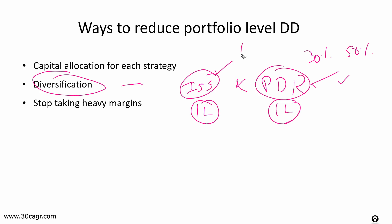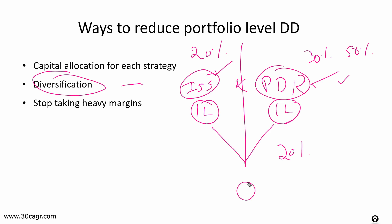The best combination is to diversify into two or more strategies. One advantage is that if you got a 20% loss in ISS strategy in one year, and gained 20% in PDR that same year, the overall drawdown of your portfolio is zero. When one strategy is in loss, the other comes to the rescue and lowers max drawdown. Even in my personal portfolio I divide capital 50% in ISS and 50% in PDR.